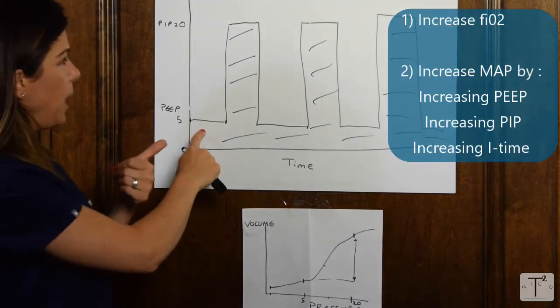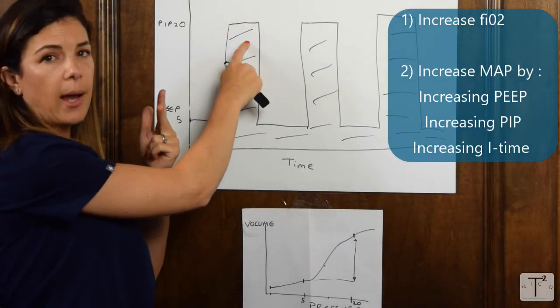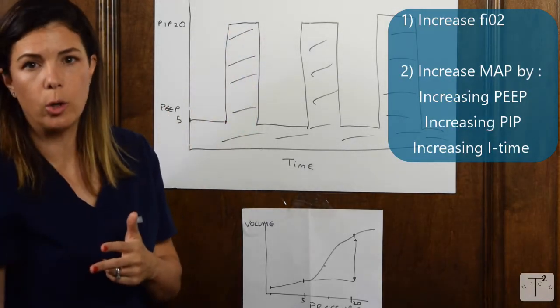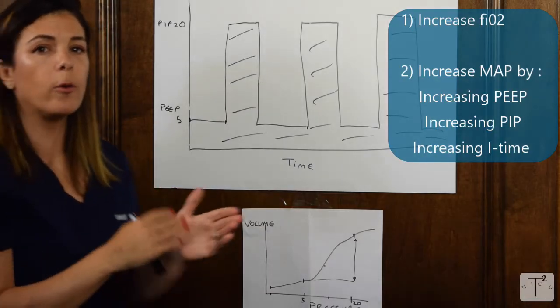Increase PEEP, increase PIP, increase I time, and increase FiO2. We can discuss all of those more later.